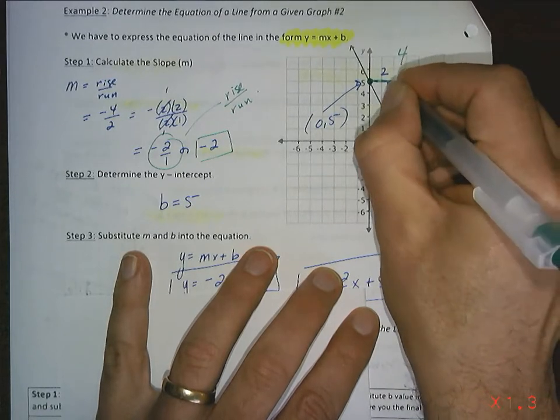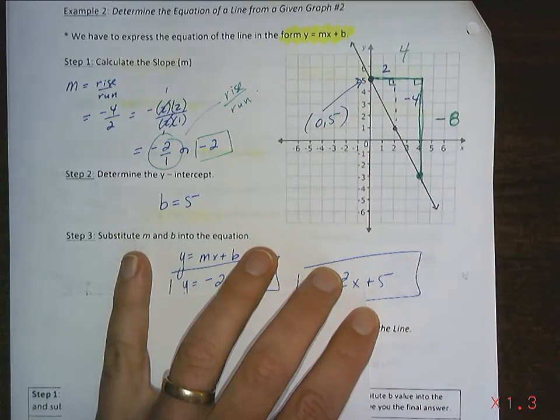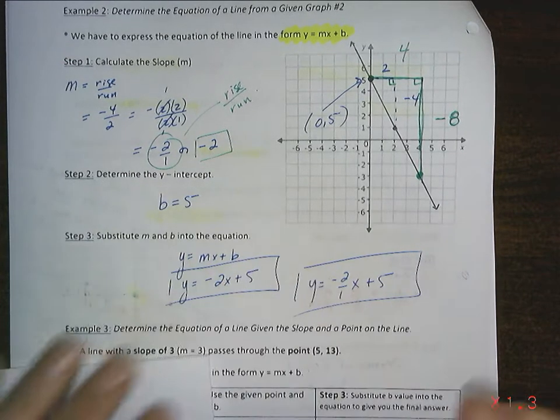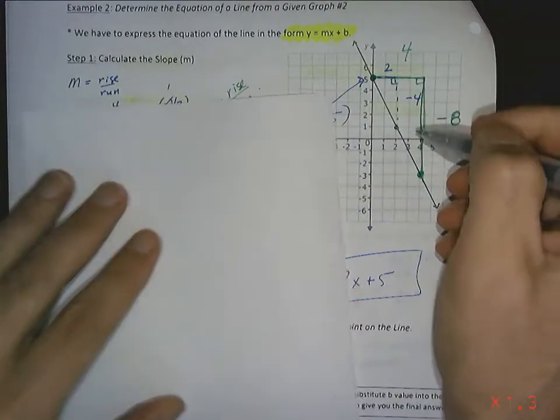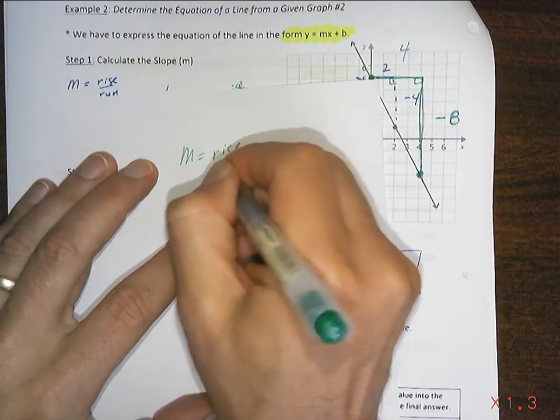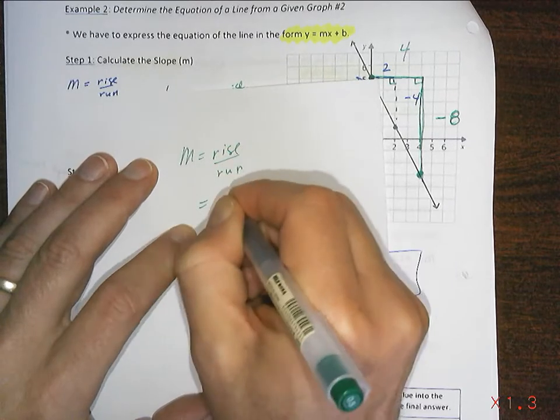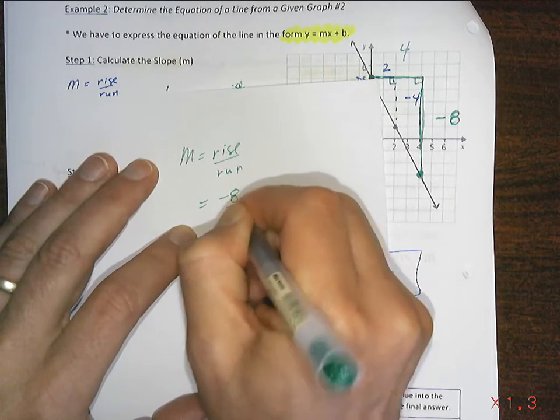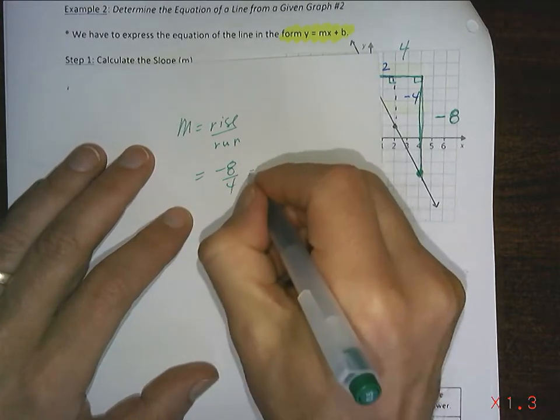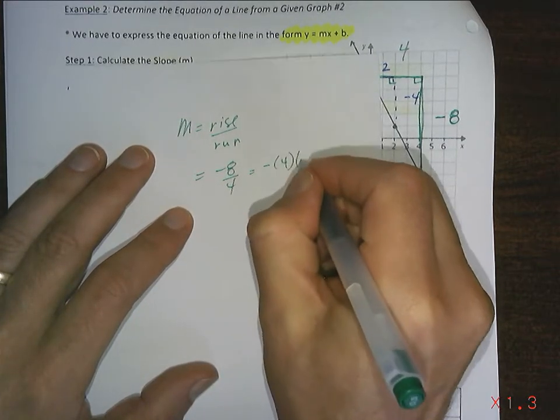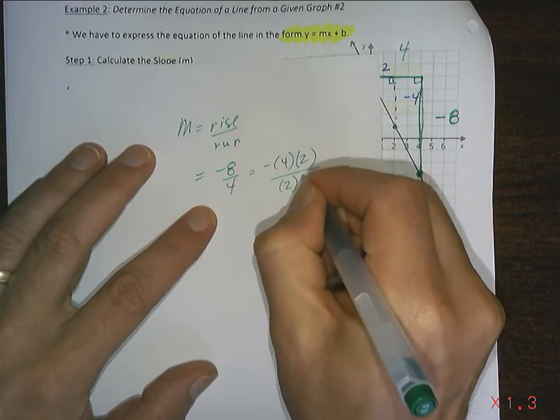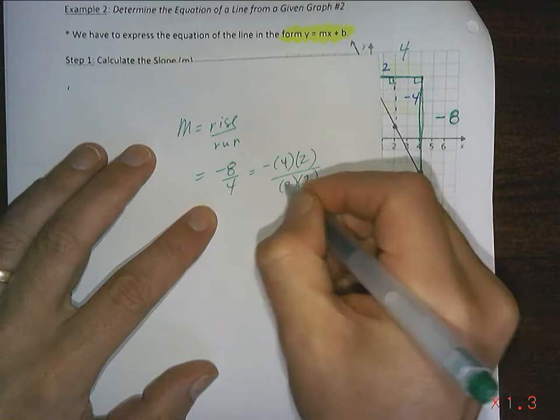These two triangles are similar which means that they have the same ratio of side lengths. Remember we've been dealing with that. What that means is that the slope of this green one, being rise over run, is going to be negative eight over four. So now we have to think about reducing that.